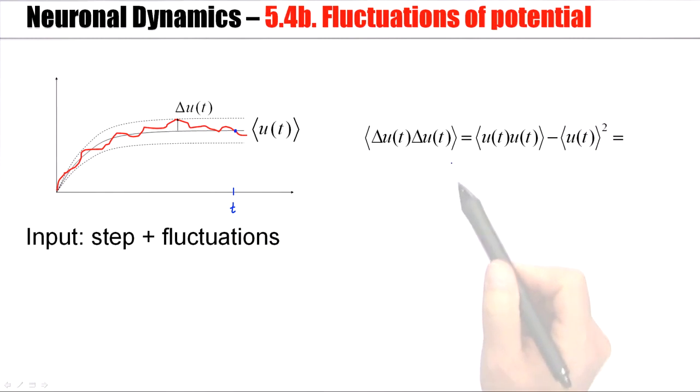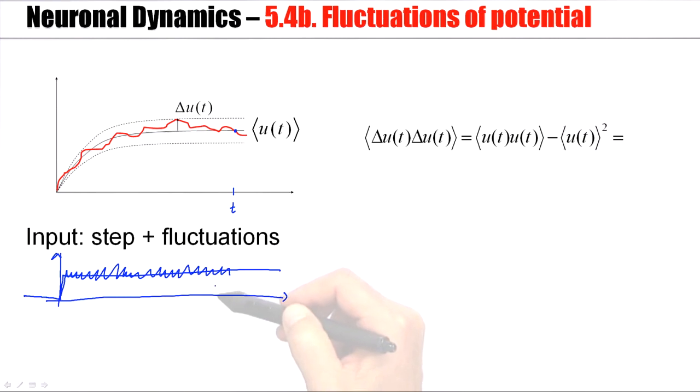And we look at the expectation of these fluctuations. Now, the specific situation here is that of a current. You can think of a step current like this, but the input was a fluctuating version of this step current. Something like this. Now, this is low-pass filtered by the differential equation and gives rise to this kind of fluctuating membrane potential trajectory. And the question is, can we calculate these fluctuations?